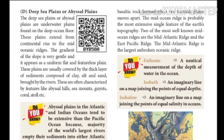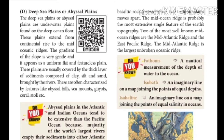Next, deep sea plains or abyssal plains are underwater plains found on the deep ocean floor. These plains extend from the continental rise to the mid-oceanic ridge. The gradient of the slope is very gentle and it appears as a uniform, flat, and featureless plain. Abyssal plains in the Atlantic and Indian Ocean tend to be more extensive than in the Pacific Ocean because the majority of the world's largest rivers empty their sediments into either the Atlantic or Indian Ocean — for example, the Amazon, Ganga, and Brahmaputra rivers.